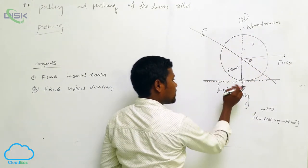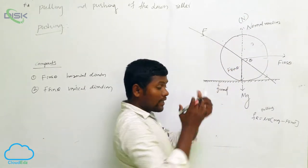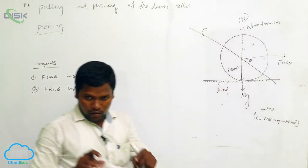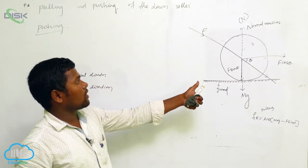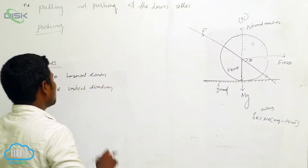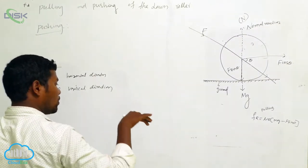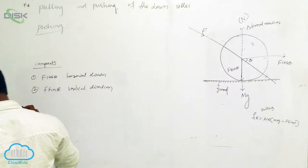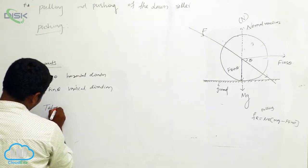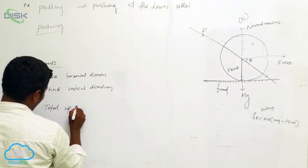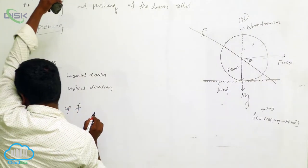The weight of the lawn roller will be downside, and the normal reaction will be upside. So the weight of the roller will be downward and normal reaction will always be upward. Then we can write: total upward force equals total downward force.